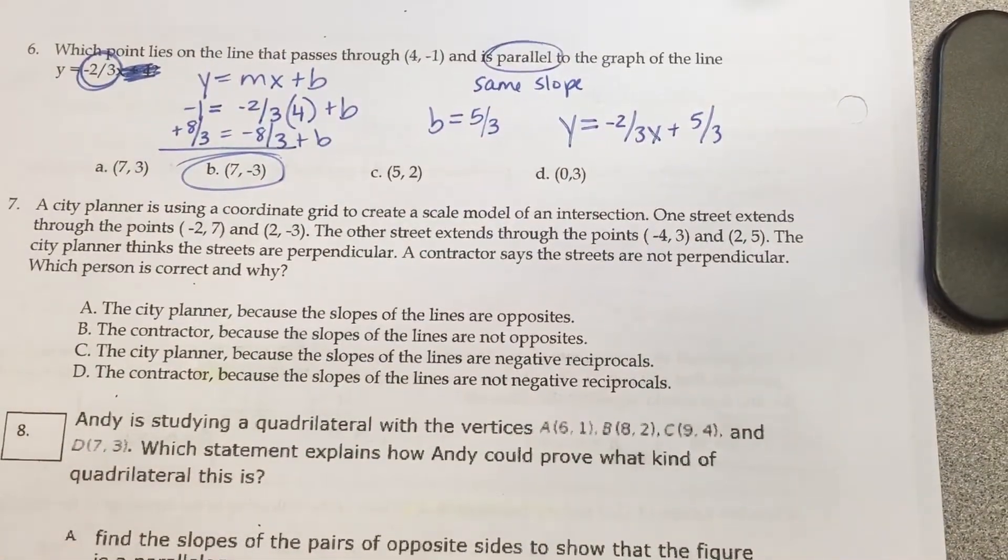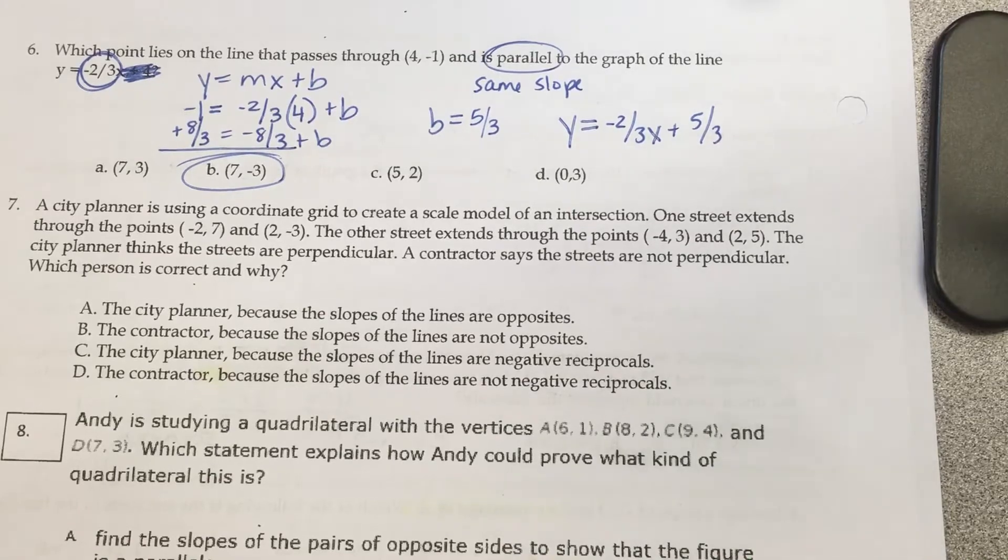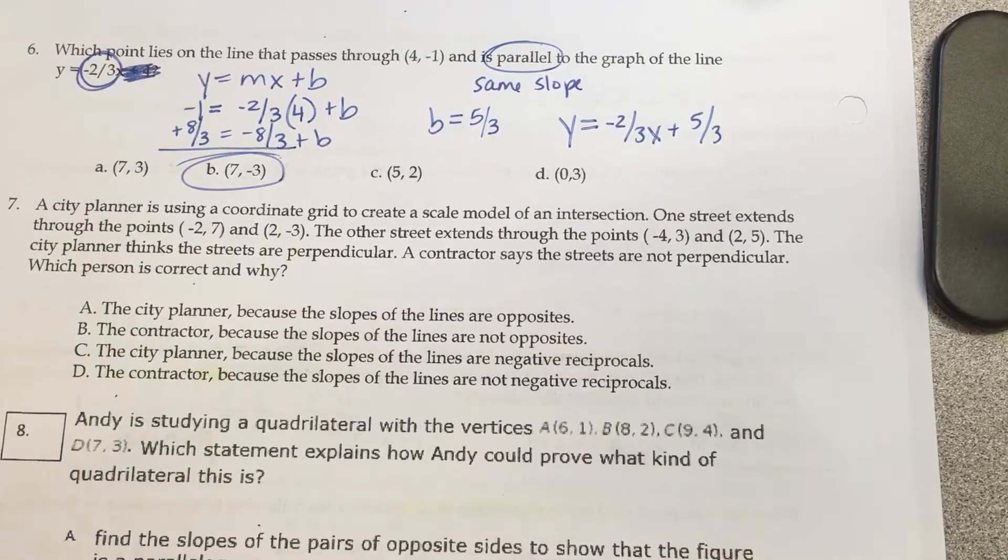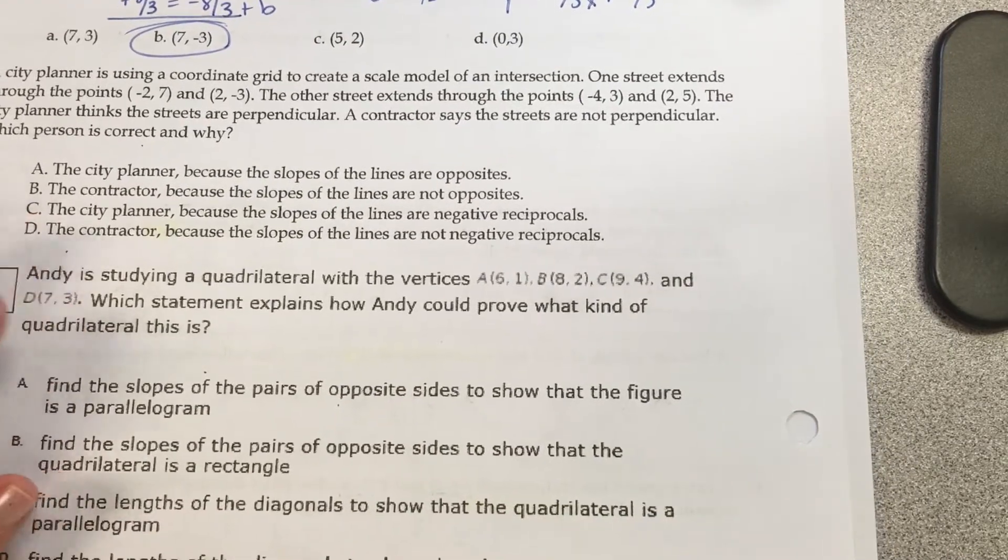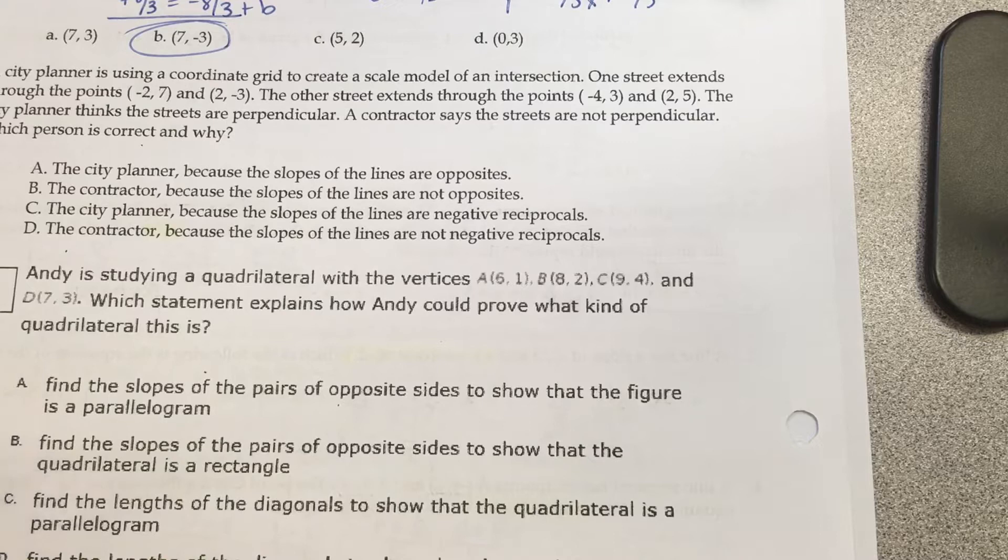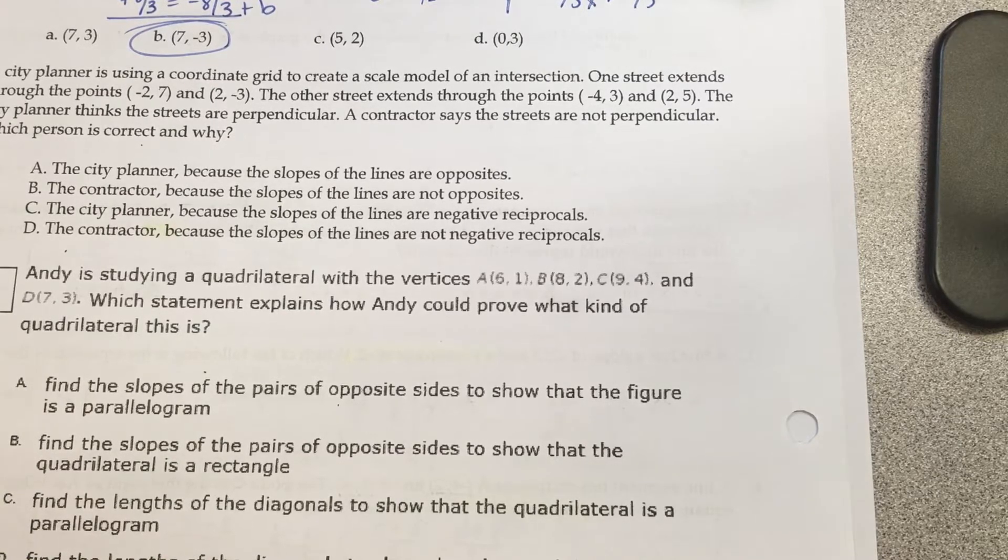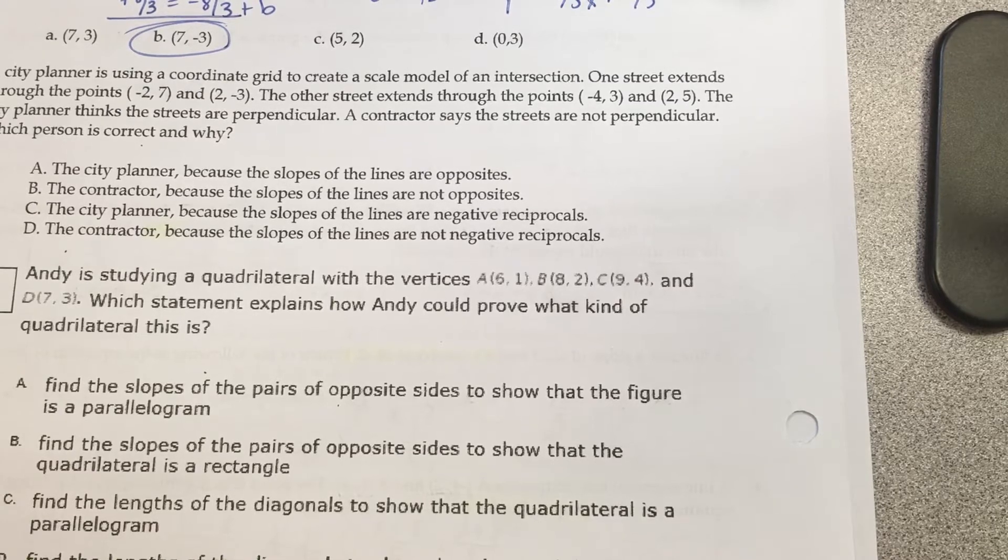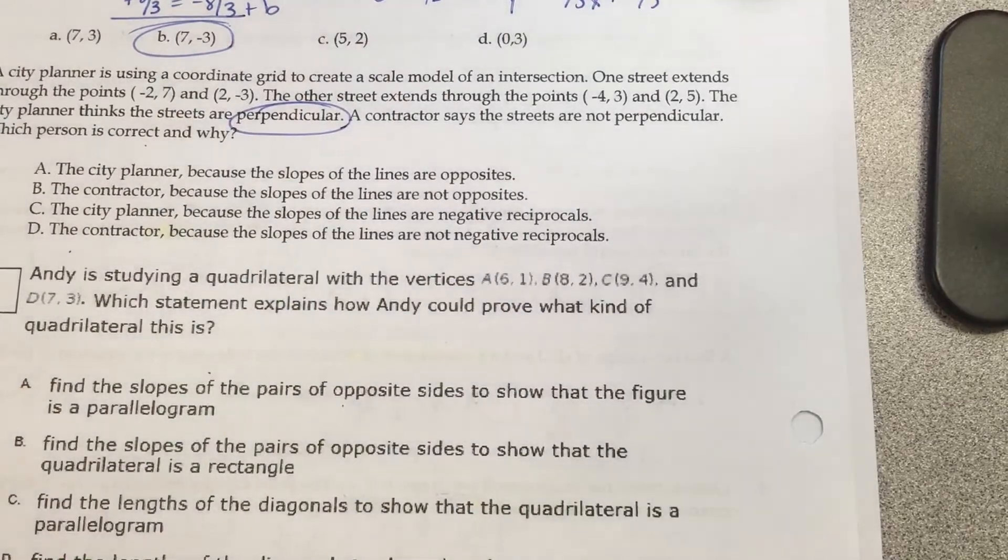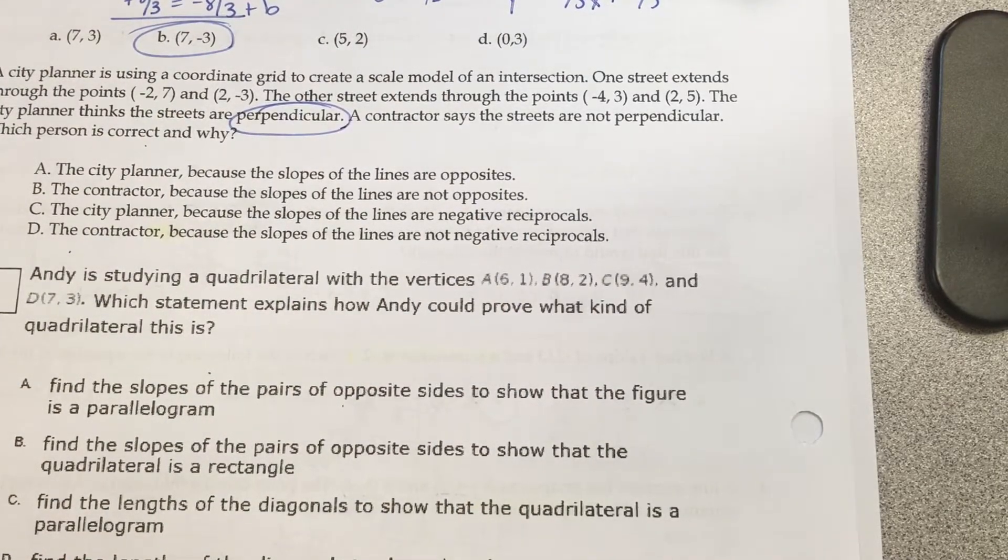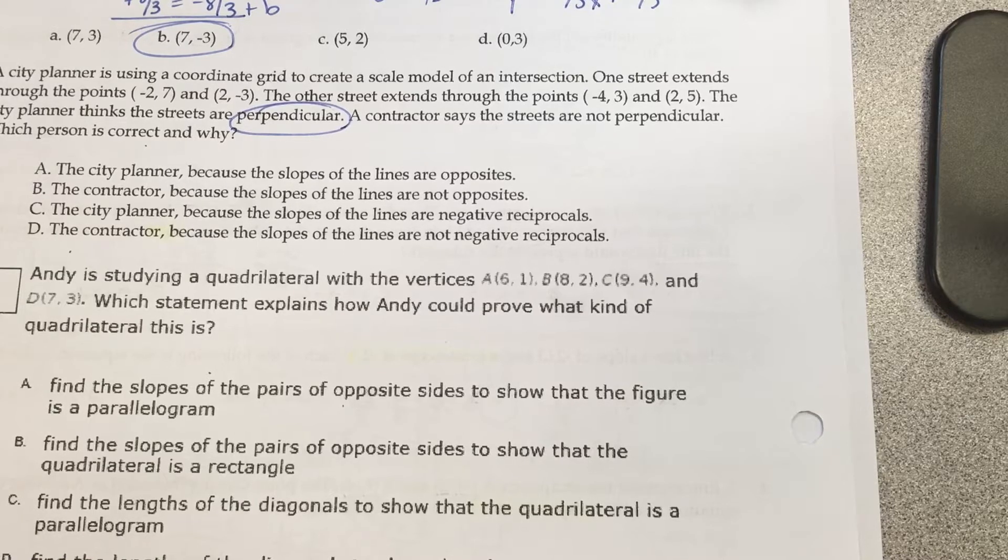A city planner is using a coordinate grid to create a scale model of an intersection. One going through the points negative 2, 7 and 2, negative 3. Another street going through negative 4, 3 and 2, 5. The city planner thinks the streets are perpendicular. A contractor says the streets are not perpendicular. Which person is correct and why? What's the keyword? Perpendicular means to flip and change the slope.